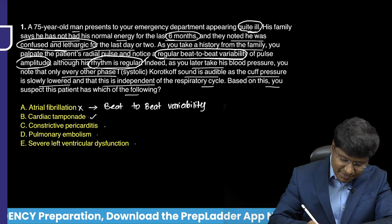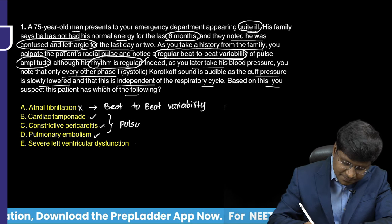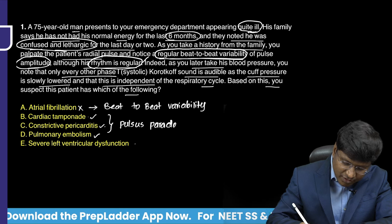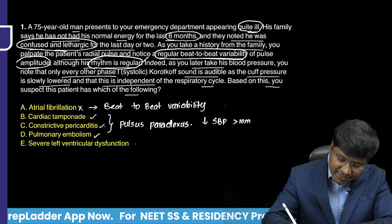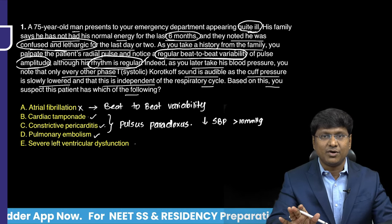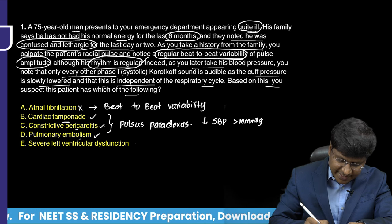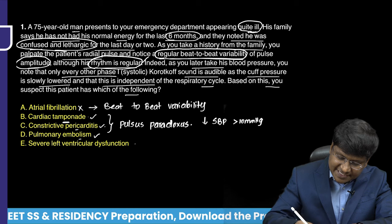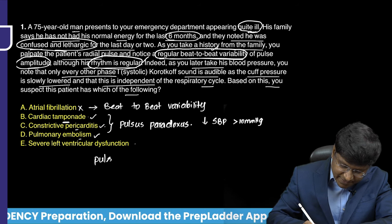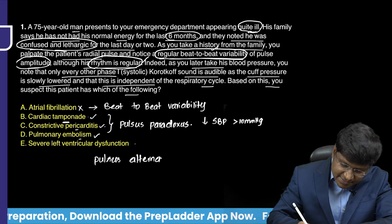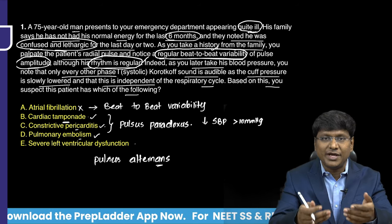In cardiac tamponade, and sometimes in constrictive pericarditis and pulmonary embolism, you can see pulsus paradoxus — a drop in systolic blood pressure by more than 10 mmHg on inspiration. However, the description of beat-to-beat variability here is not pulsus paradoxus; it is the description of pulsus alternans. That is the key term: beat-to-beat variability indicates pulsus alternans.